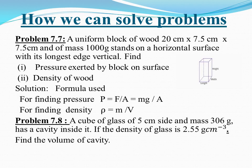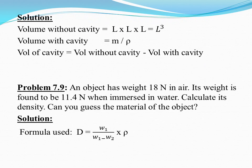Problem 7.8: A cube of glass of 5 cm side and mass 306 g has a cavity inside it. If the density of glass is 2.55 g/cm³, find the volume of the cavity. Volume without cavity = L³. Volume with cavity = mass / density. Volume of cavity = volume without cavity minus volume with cavity.